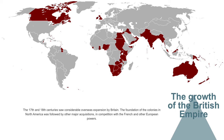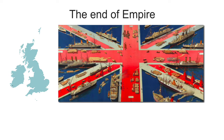It began with overseas possessions and trading posts established by England between the late 16th and early 18th century. At its height it was the largest empire in history and for over a century was the foremost global power. By the 1930s the British Empire held 23% of the world population. At the death of Queen Victoria in 1901, the British Empire had expanded to almost one-fifth of the world's landmass and one-quarter of the world's population.